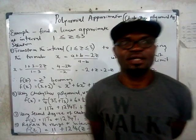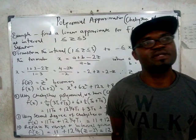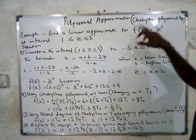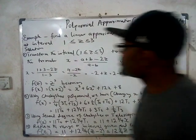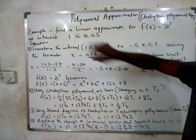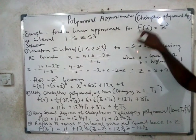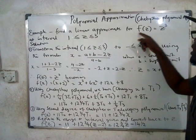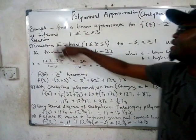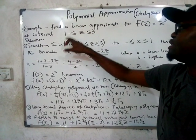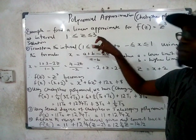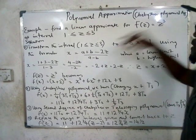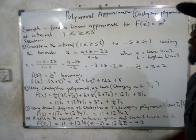Hello, welcome. Today we're going to be looking at polynomial approximation using a special method known as Chebyshev's method — Chebyshev polynomial approximation. If you're given a question like this: find a linear approximation for f(z) = z³ at the interval one to three, that is how the question normally comes.